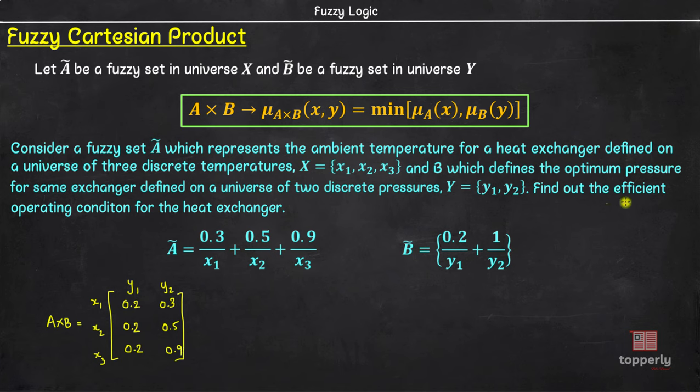Also, coming to the efficient operating condition, we can say that the efficient operating condition is when temperature is x3 and pressure is y2 as 0.9 is the highest value in this matrix. Now, please keep in mind that this is a very crude real life example and does not represent actual real life. In real life applications, we will be having much more complex fuzzy systems.